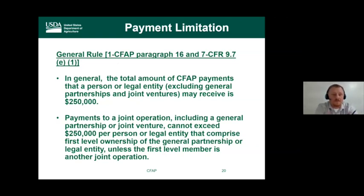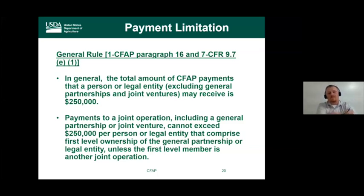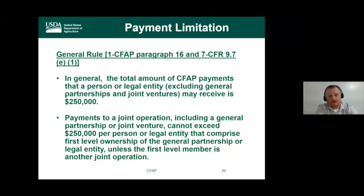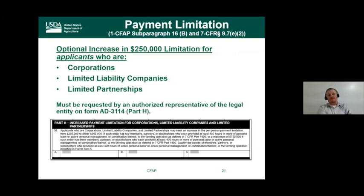The general payment limitation rule for CFAP is that a person or legal entity — excluding general partnerships and joint ventures — may receive a maximum of $250,000. Payments to joint operations including general partnerships or joint ventures cannot exceed $250,000 per member. Payments always follow back to a Social Security number. A general partnership with three members can earn $250,000 times three.